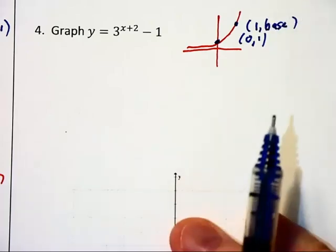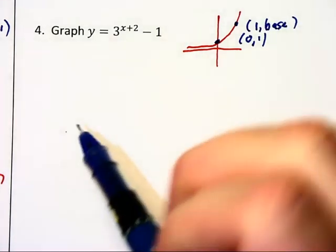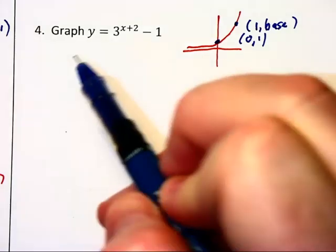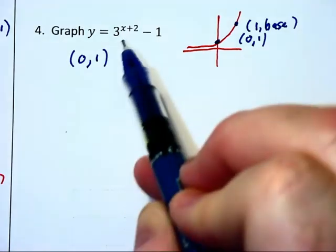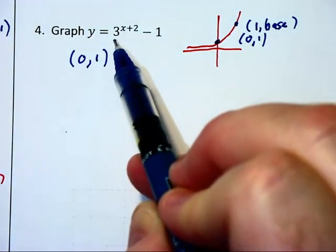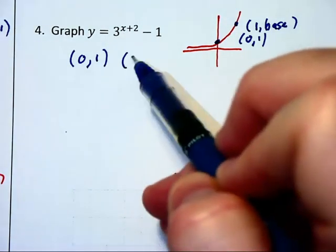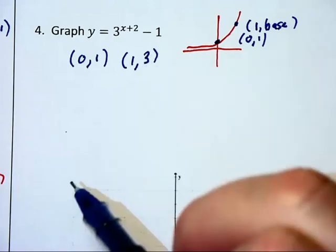That tells me this graph, before we do any transformations, is going to go through (0,1). It would go through base—this is base 3—(1,3) as two key points.